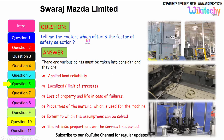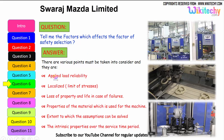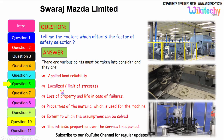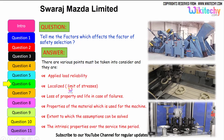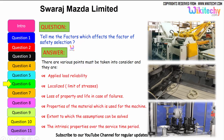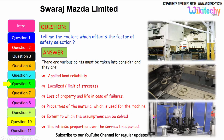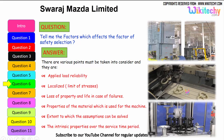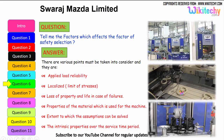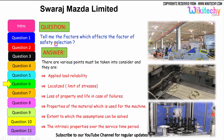Now let us see the factors which affect factor of safety selection. These include: applied load reliability, limit of stresses as localized, and loss of property and life in case of failures. Also important are the properties of the material used for the machine, the extent to which assumptions can be resolved — whether it will extend, compress, or otherwise — and the intrinsic property over the service time period, and how it will sustain everything.